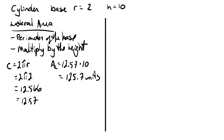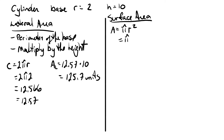Now we need to find the surface area. First we find the area of the base, which is pi r squared. The radius is two, so it's pi times two squared. Multiplying that out we get twelve point five seven square units.